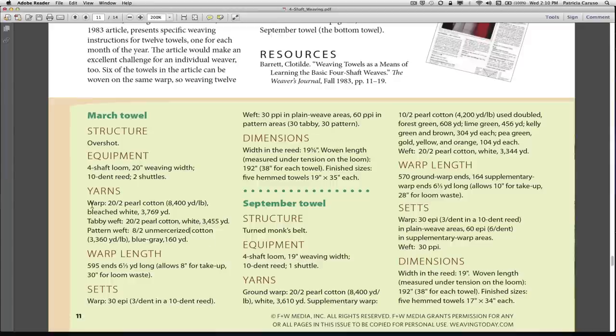But right now, we'll just go by what it has here, 22 pearl cotton. The warp length, it says it's 595 ends times 6 1/3 yards long, which allows for the take-up in the loom waste. The set is 30 ends per inch, which is 3 ends per dent in a 10-dent reed. The weft is 30 picks per inch in plain weave areas and 60 picks per inch in the pattern areas. 30 tabby and 30 pattern.